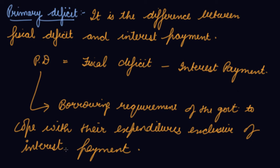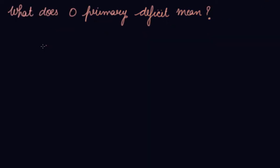So this is your primary deficit. Payment of interest highlights the extent to which we are already in a debt trap. Your primary deficit is equal to fiscal deficit minus interest payment.